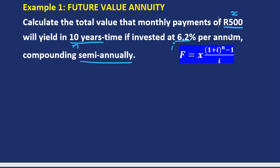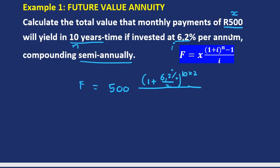What we're trying to determine here is F, the future value of all these payments — all these 500 rands being invested. The interest rate is 6.2%, but we're told it's compounding semi-annually. Semi-annually means twice a year, so we divide by 2, and we must factor that 2 into the time as well: 10 years multiplied by 2.